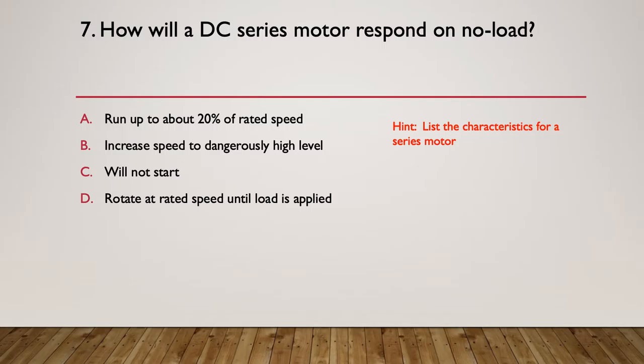A: Run up to about 20% of the rated speed. B: Increase speed to a dangerously high level. C: Will not start. D: Rotate at a rated speed until the load is applied. The answer is it's increased its speed to dangerously high levels. When we say dangerously high, it can rotate so fast that it will actually, the centrifugal force will quite often strip off the armature windings.